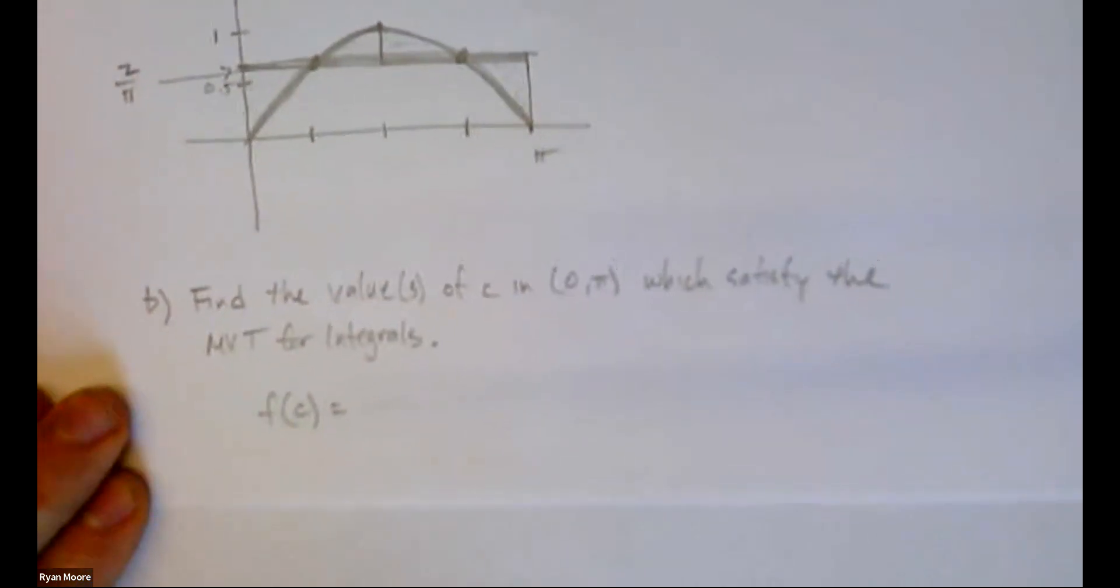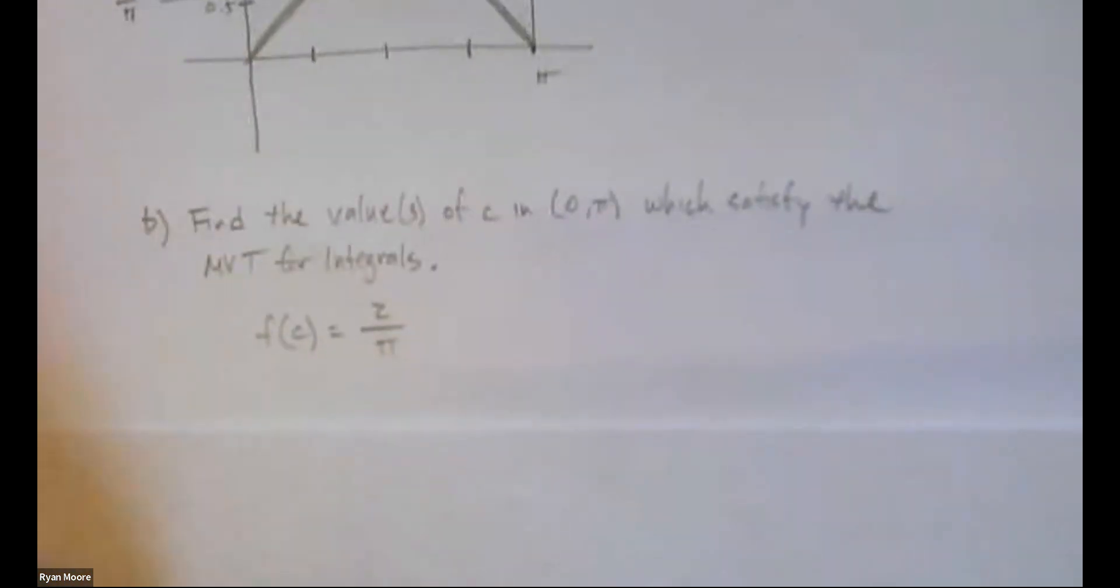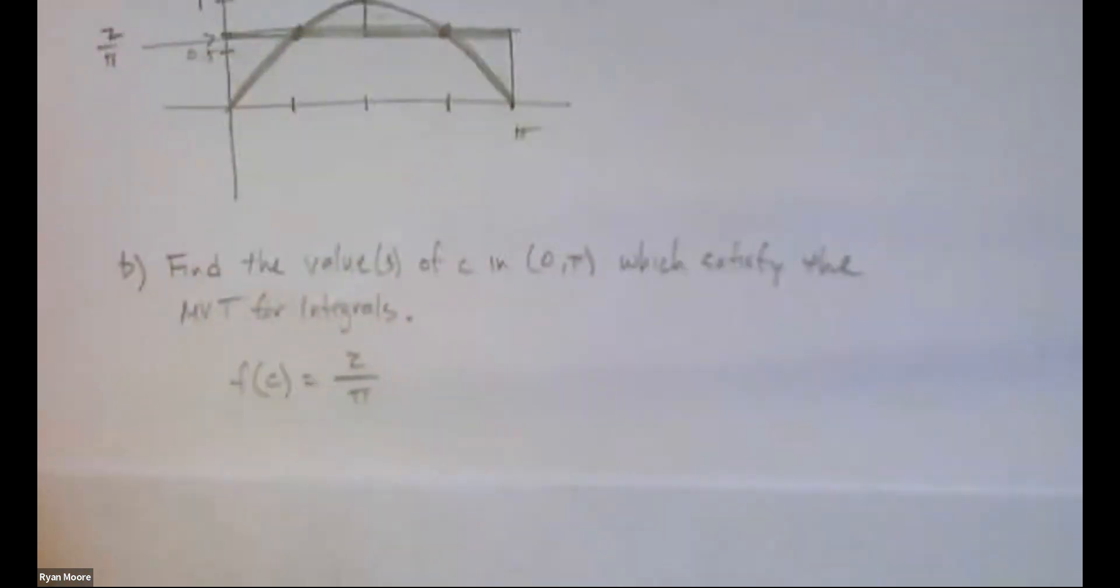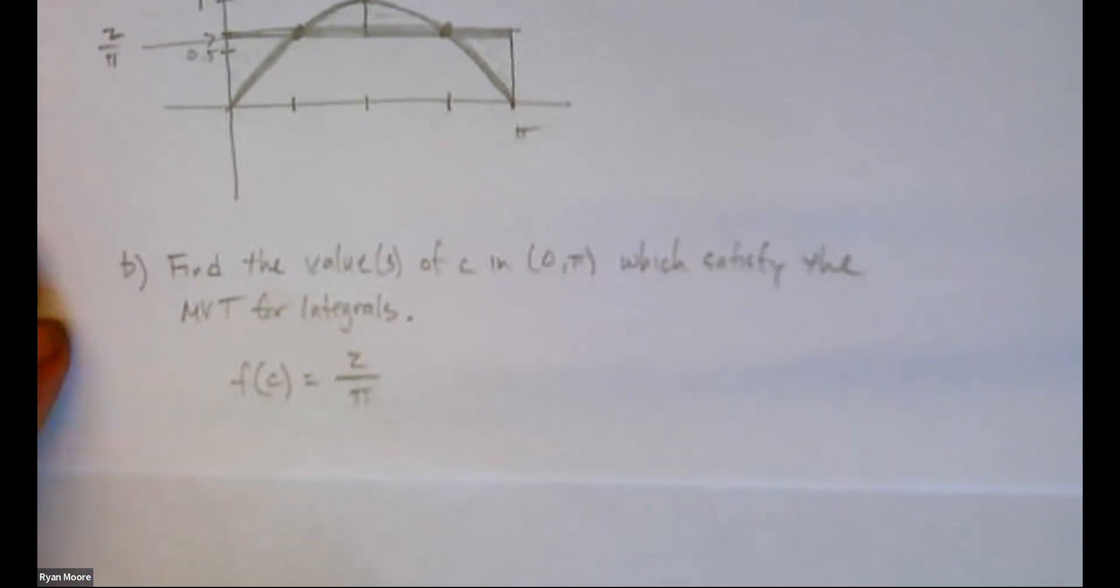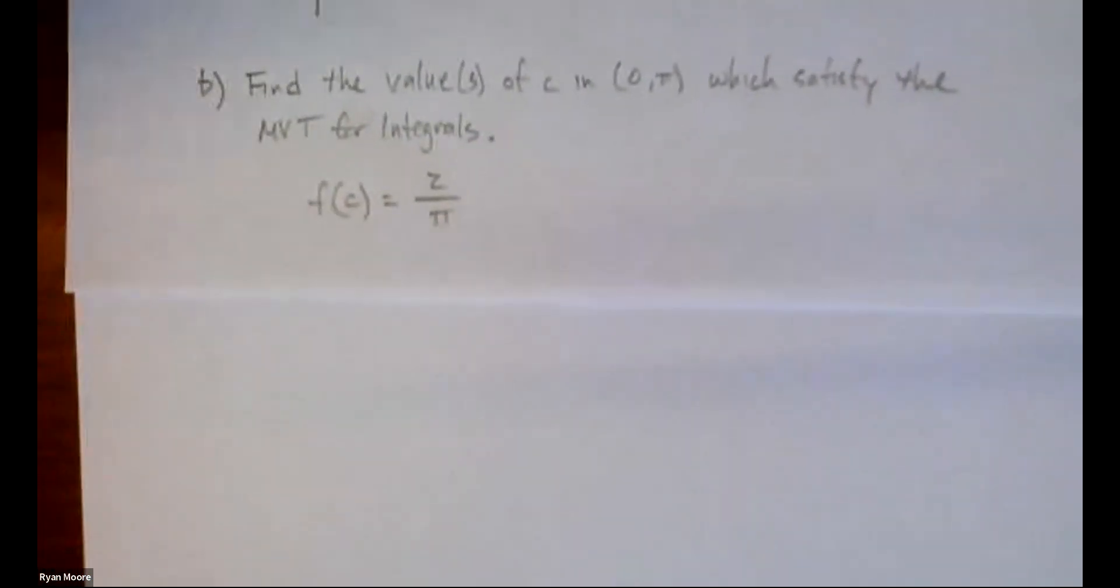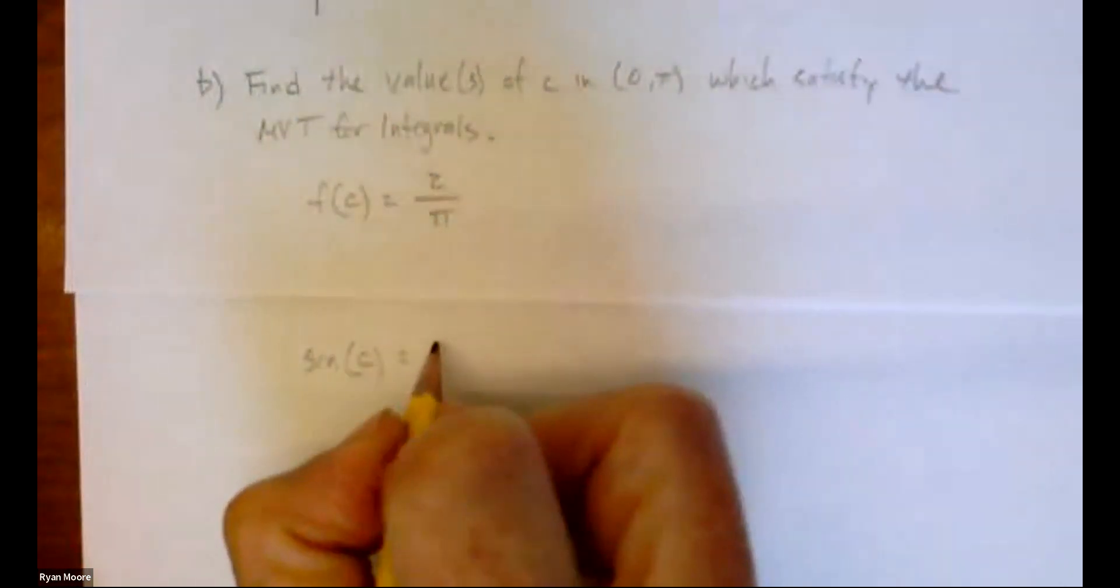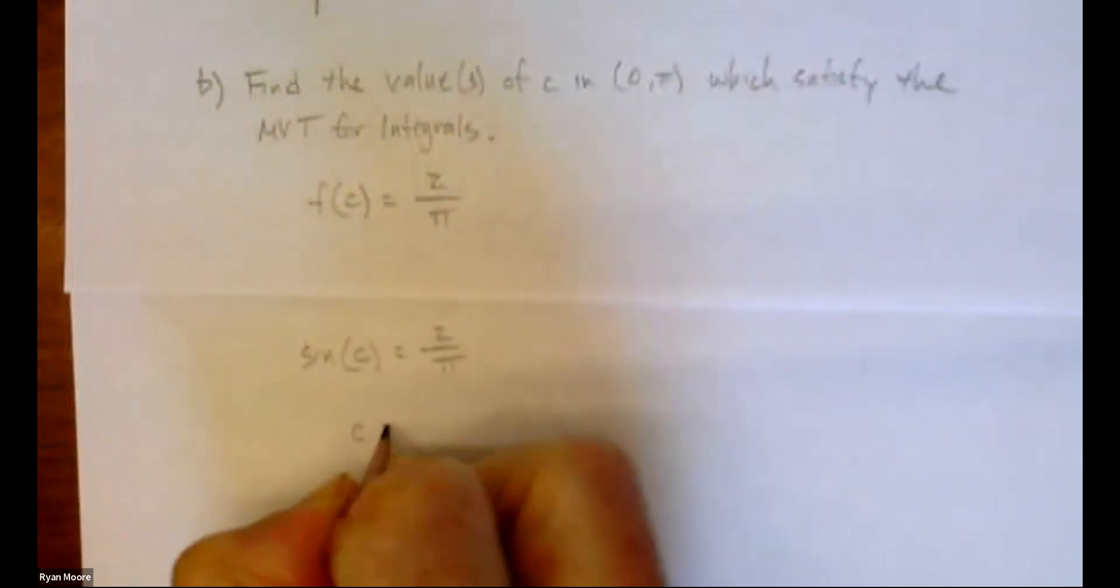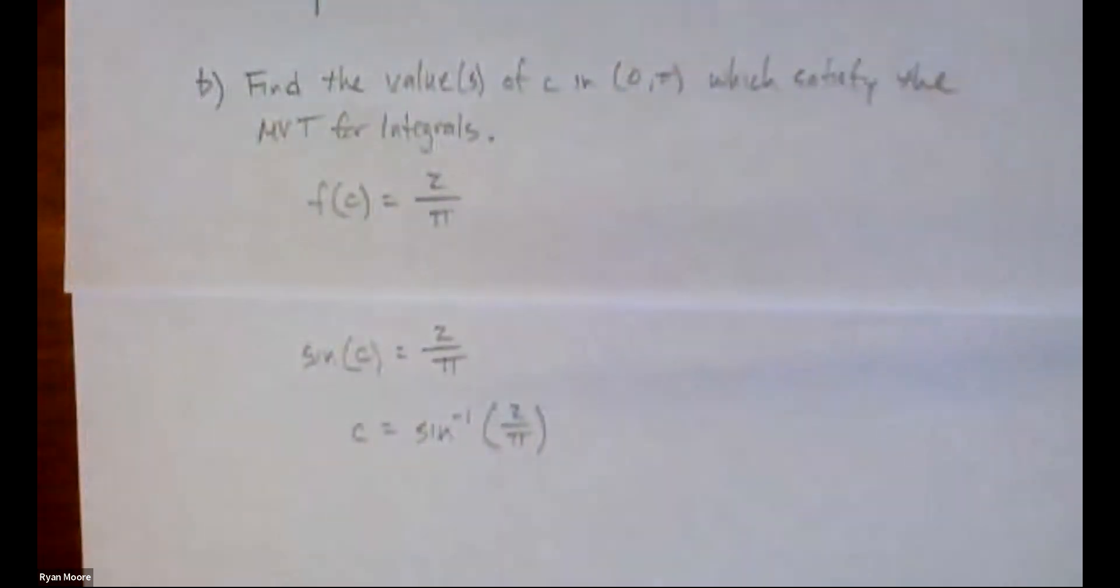You know, if we wanted to set it up, we could say F of C equals, and we've already done the hard work. We know F average is going to come out as two over pi. Where, what value of C will give a y value of two over pi? So we could say okay, that would mean that the sine of C, and you could certainly use X here instead to solve.